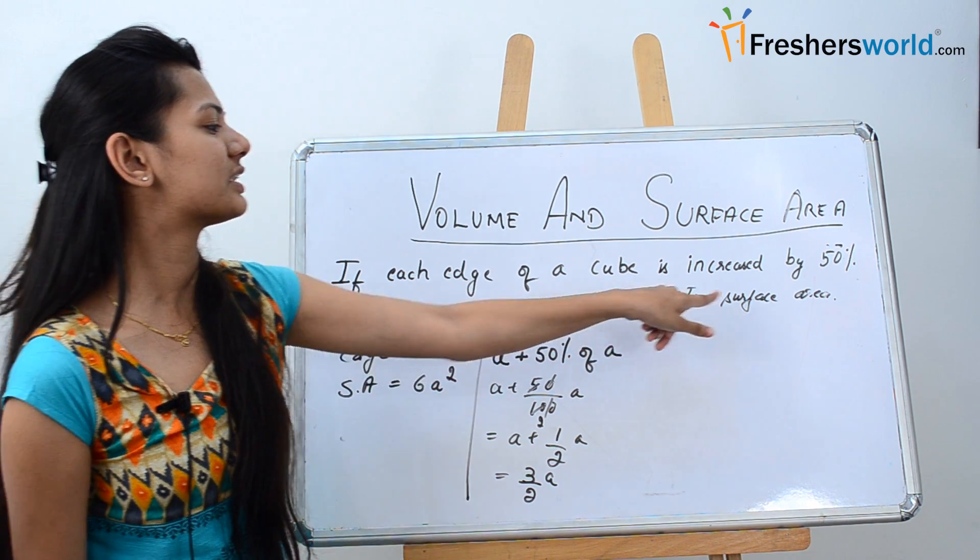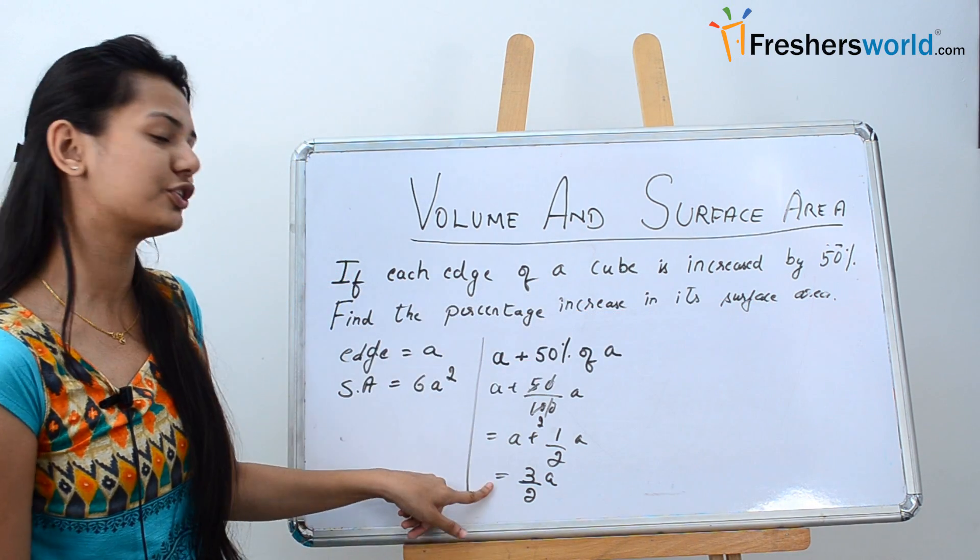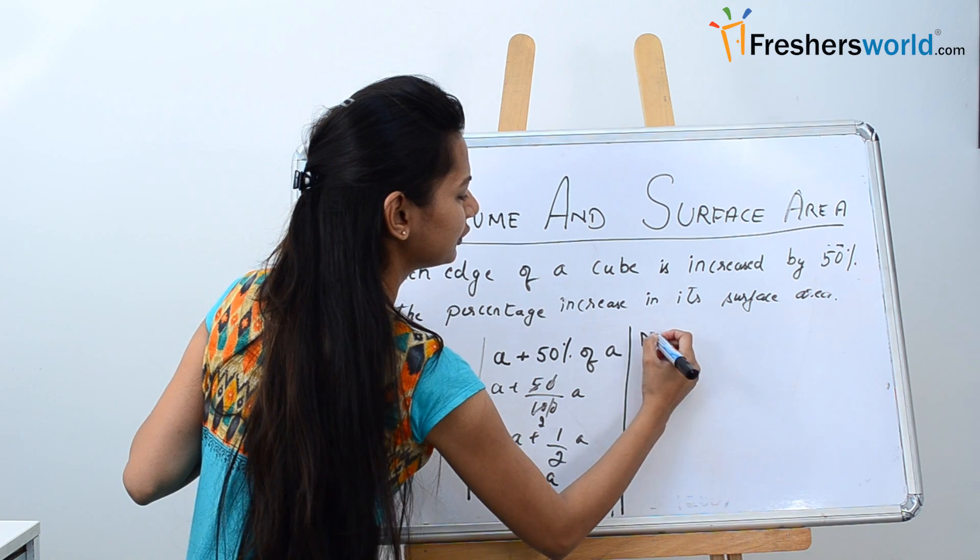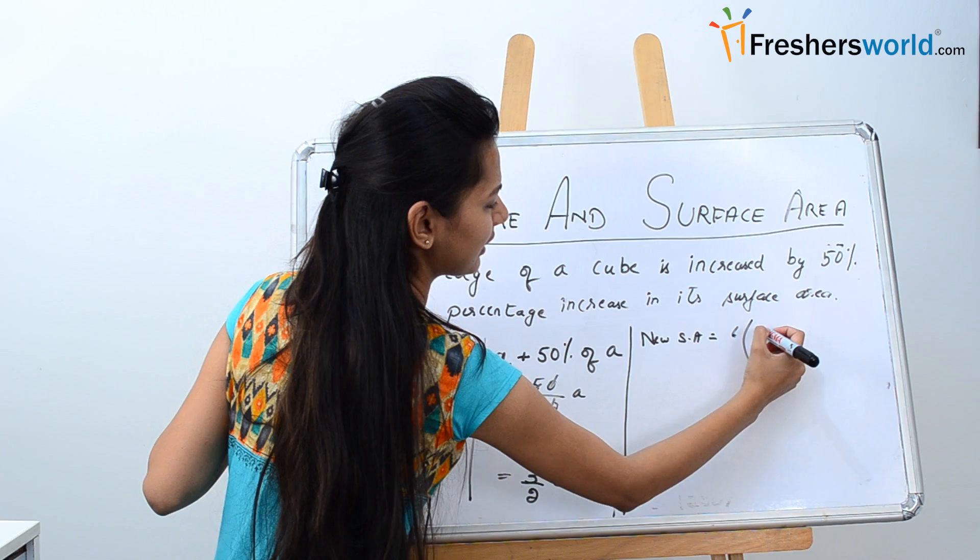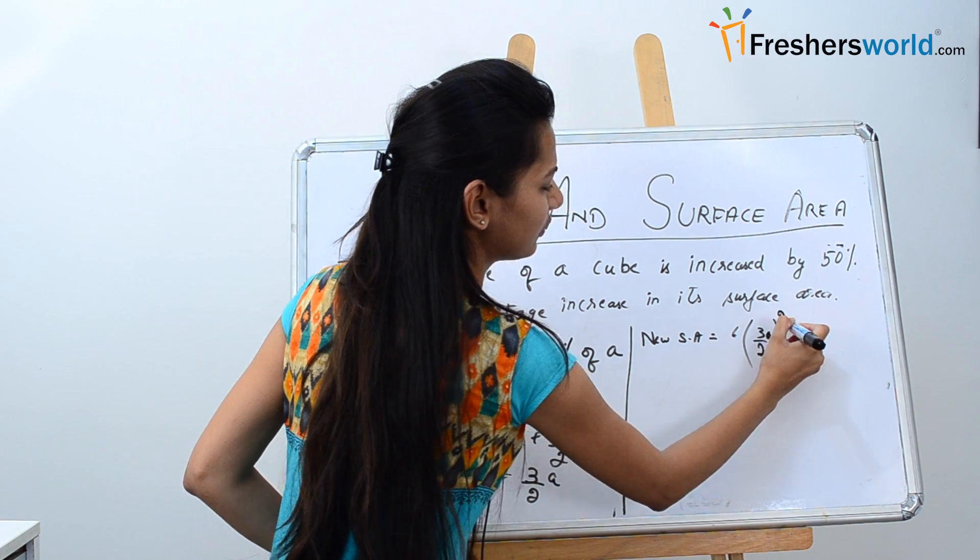Now we need to find the percentage increase in its surface area. So let's find the new surface area. The new surface area will be given by 6a squared. That is 6 into 3 by 2 a the whole squared.